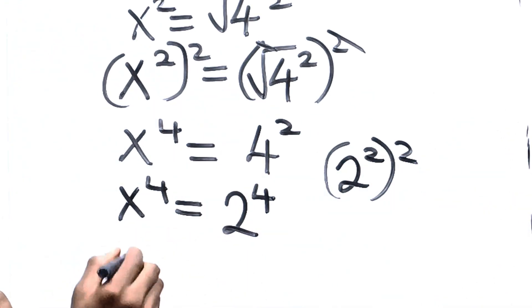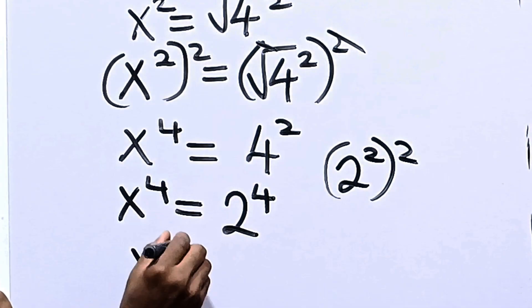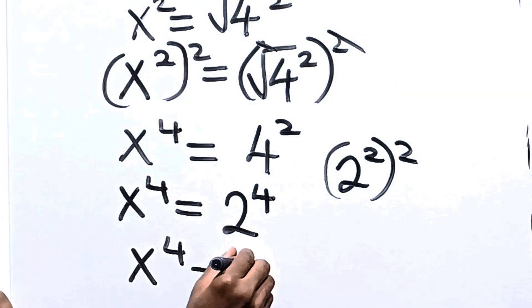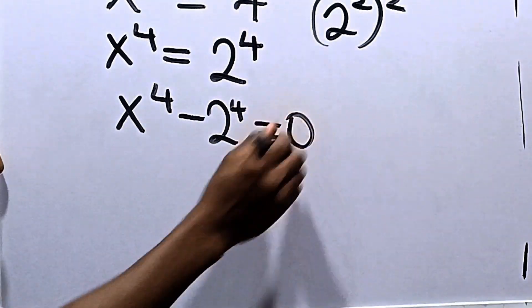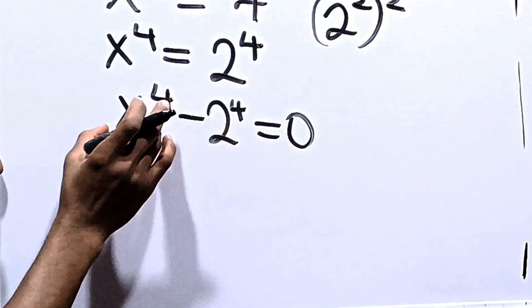Now, we have this. So we can say that x raised to the power of 4 minus 2 raised to the power of 4 is equal to 0. At this point, you can say let's refactorize this.